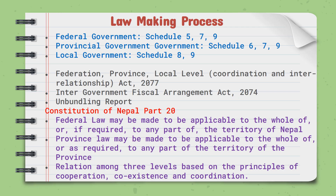While talking about the law-making process, in federalism we have three tiers of government, and each government has the power to make law. Our constitution, in Schedules 5, 7, and 9, is related to federal legislation. Schedules 6, 7, and 9 are related to provincial legislation. Schedule 8 and 9 is related to local government legislation. We also have the Federation-Province-Local Level Coordination and Interrelationship Act 2077, the Intergovernmental Financial Arrangement Act 2074, and the Unbundling Report. These three documents guide the jurisdiction of the three levels of government.